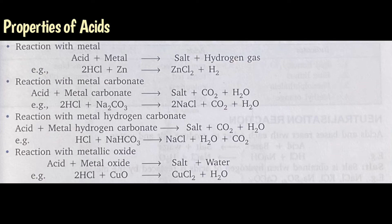Another property of acid is reaction with metallic oxide. When acid reacts with metal oxide, salt and water are formed. For example, when hydrochloric acid reacts with copper oxide, copper chloride and water are formed. So these were the chemical properties of acids.